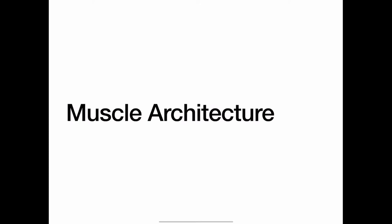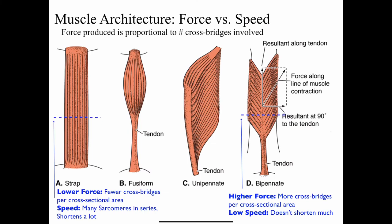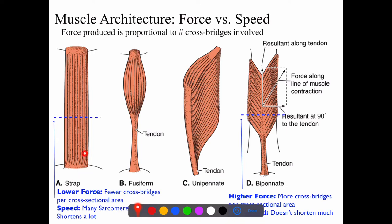Let's talk about muscle architecture — the physical arrangement of muscles and muscle fibers. Strap muscles are long and have long muscle fibers, going from origin to insertion. Fusiform have a belly shape, usually attached to a tendon. Unipennate have a tendon that the muscle fiber is attached to at an angle, so it looks like half of a feather. And then bipennate is basically a symmetrical attachment like a feather.